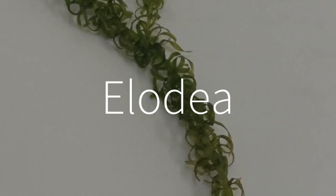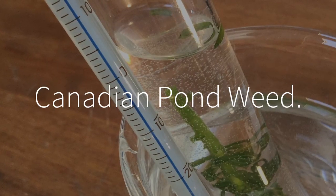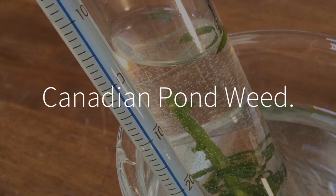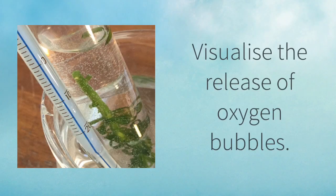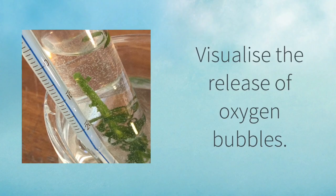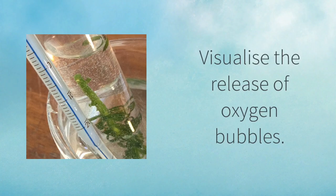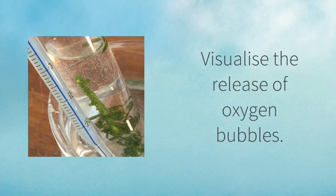We used a very particular type of plant known as allodea, otherwise referred to as Canadian pondweed. The reason why we use this pondweed or this aquatic plant was so that we could visualize the bubbles of oxygen being produced.